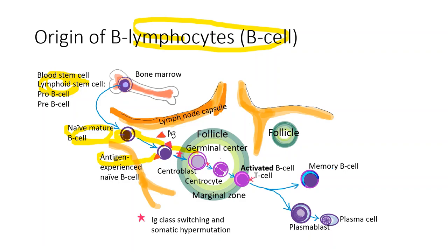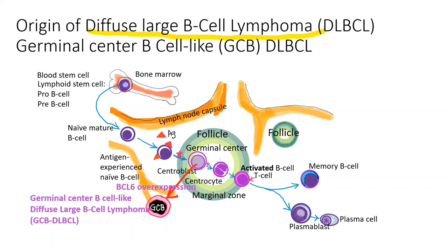After exposure to the antigen, they enter the follicle passing through the germinal center. Those B cells become centroblasts and centrocytes inside the germinal center and become fully activated. After encountering the helper T cells, they differentiate into either memory B cells or plasmablasts and plasma cells.